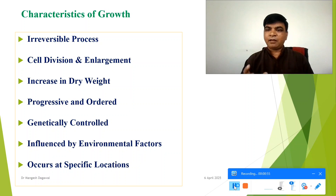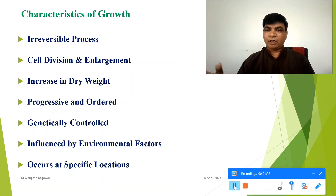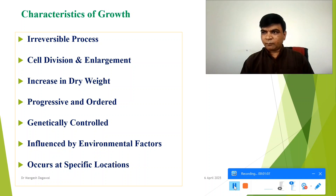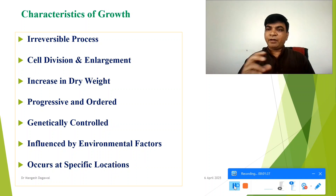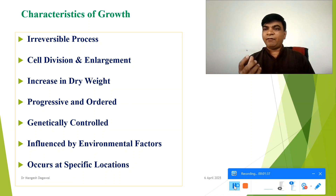That growth stays permanent — it increases the number of cells. Another characteristic is an increase in dry weight, meaning the plant produces and stores organic material in the form of starch, cellulose, and protein. This is not just an increase in weight due to water — it is organic material.